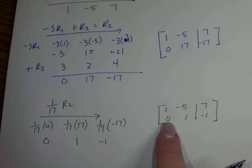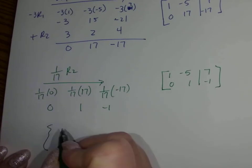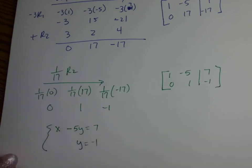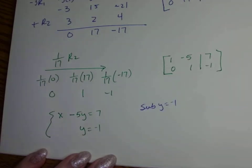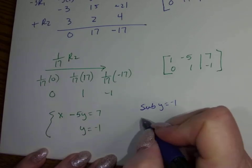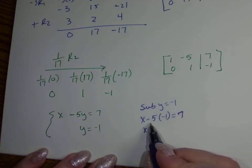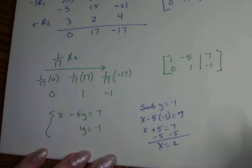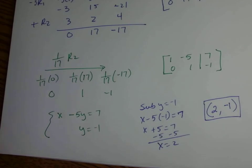Rewriting the matrix: 1, negative 5, 7 and 0, 1, negative 1. We've achieved our goals. Rewriting the system: x minus 5y equals 7, and y equals negative 1. Substituting y equals negative 1: x minus 5 times negative 1 equals 7, so x plus 5 equals 7, and x equals 2. Our solution is the ordered pair 2, negative 1. You can plug it back into your original system to verify.